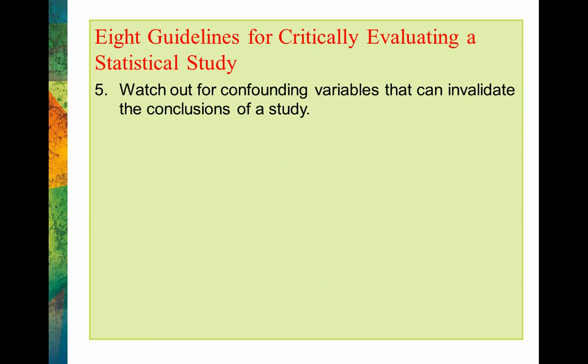We want to watch out for confounding variables because they can invalidate the conclusions of a study. A confounding variable is a variable essentially introduced into a study that provides some type of confusion. That often happens with correlational research, also known as observational research. The bottom line is observational research isn't as clean as a true experimental study, and therefore there are often confounds that confuse the conclusions of the results. We'll talk about some of those examples.